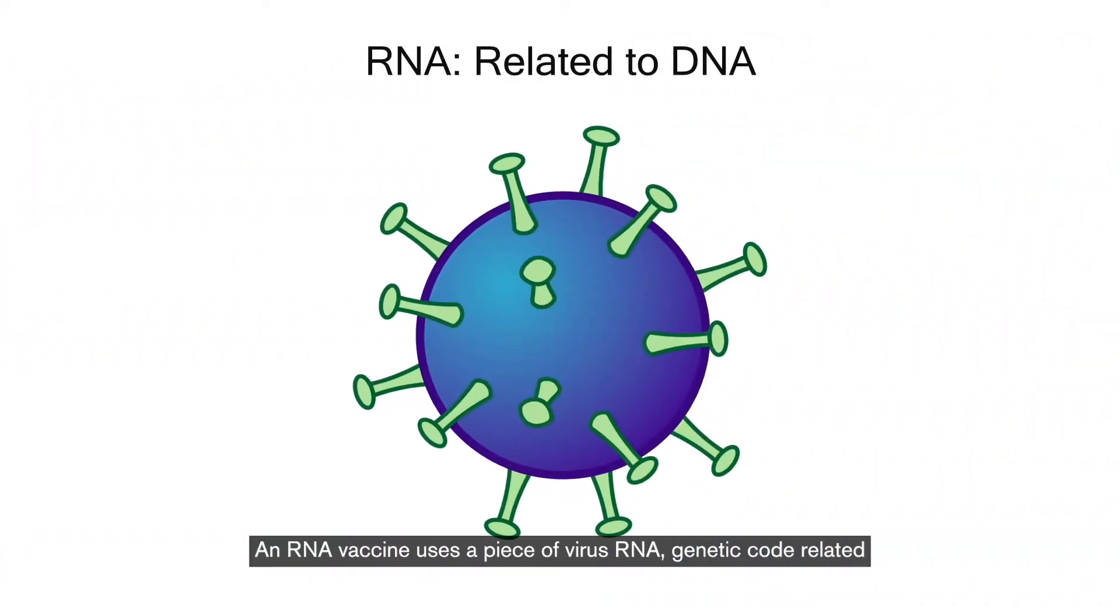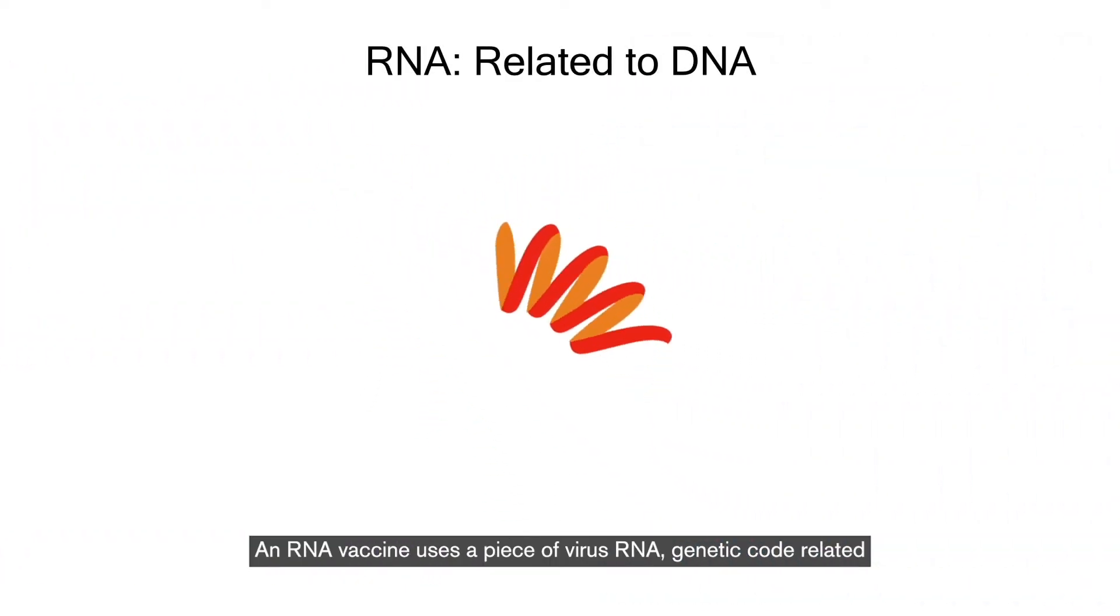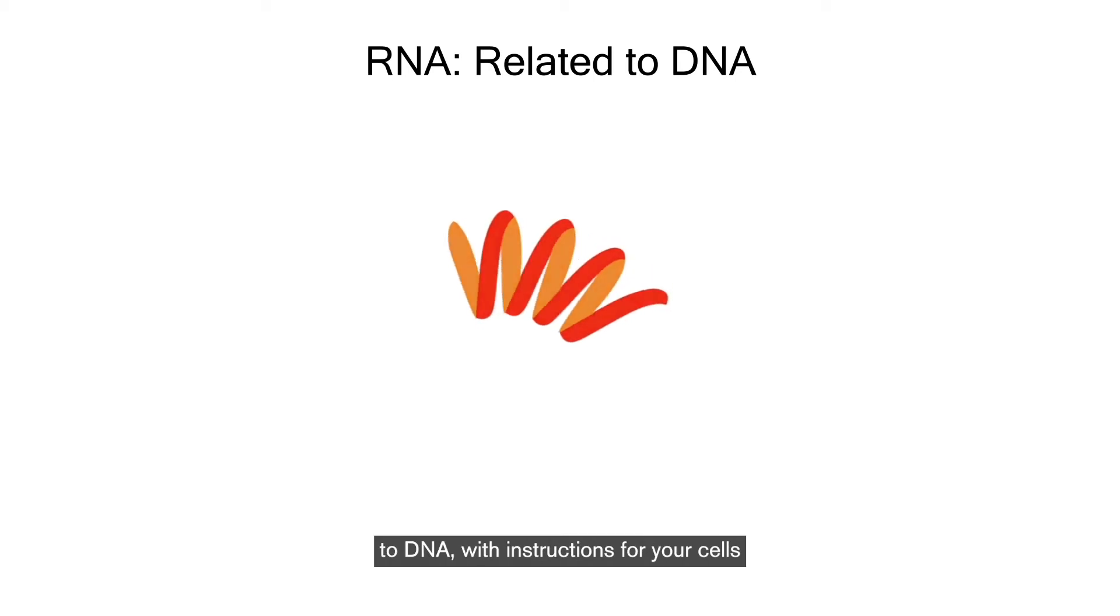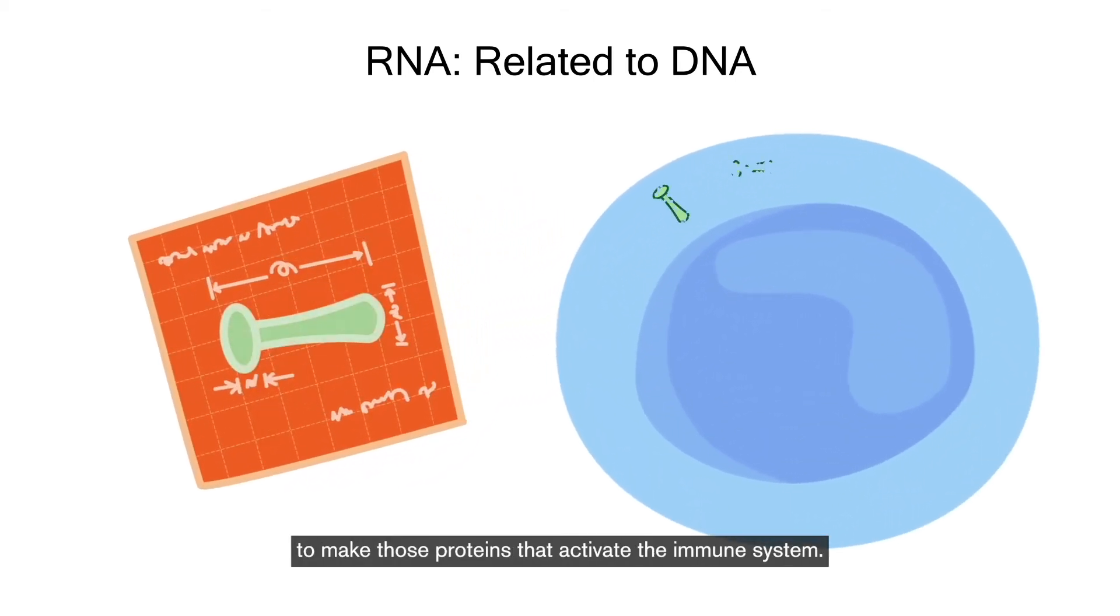An RNA vaccine uses a piece of virus RNA, genetic code related to DNA, with instructions for your cells to make those proteins that activate the immune system.